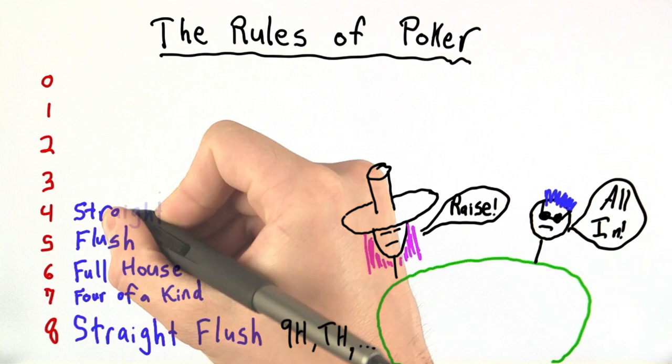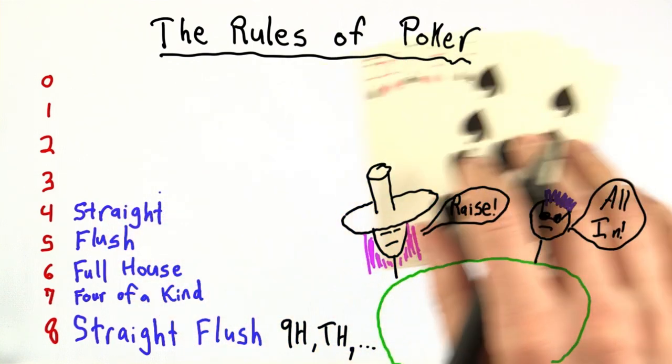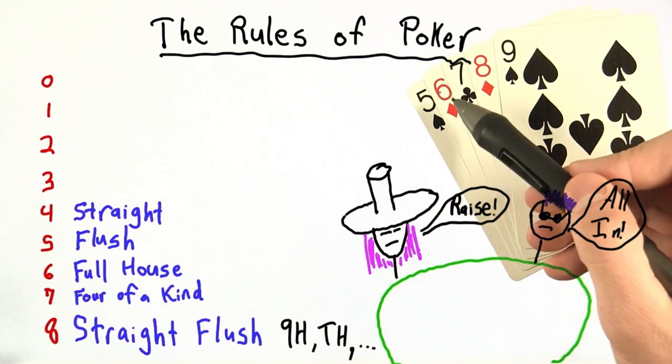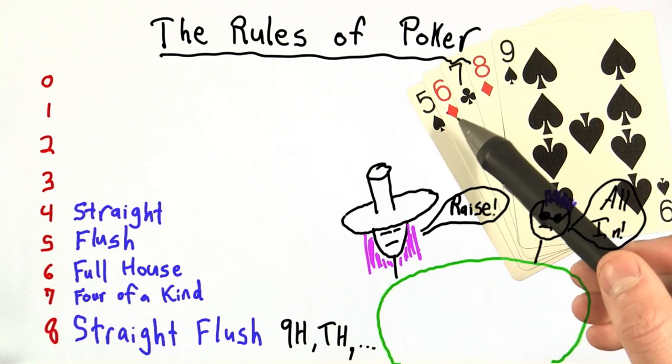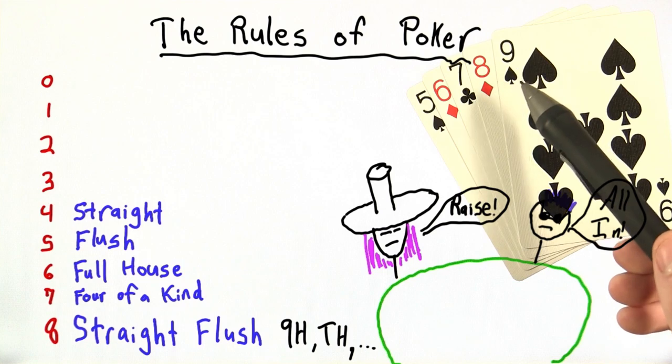Next we have the straight. And a straight is just five cards in sequential order. Five, six, seven, eight, nine. And here the suit doesn't matter at all. We have a spade, diamond, club, diamond, and another spade.